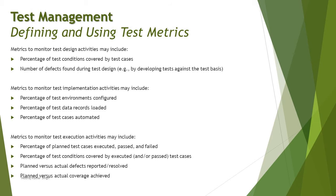Metrics to monitor test design activities include: percentage of test conditions covered by test cases — how many test conditions are converted into test cases and how many test cases have been created to cover them — and number of defects found during test design. During test design you get many queries and questions to raise with authors that may have been missed in test analysis, but finding them at this phase still helps minimize the cost of fixing defects.